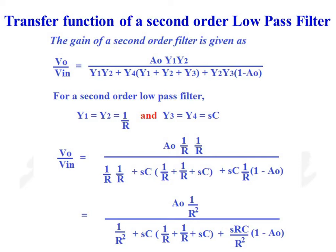For a 2nd order low pass filter, Y1 = Y2 = 1/R and Y3 = Y4 = sC. Therefore, we can write V0/VIN = A0·(1/R)·(1/R), the whole divided by (1/R)·(1/R) + sC·(1/R + sC·(1/R) + 1/R + 1/R + sC) + sC·(1/R)·(1 − A0).